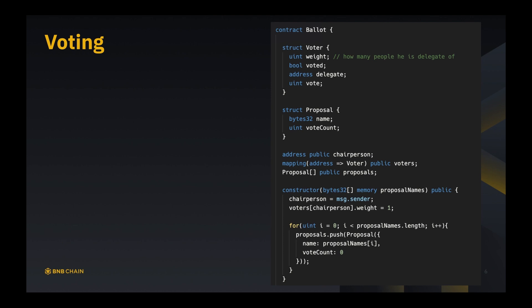The first structure is called Voter. We have unsigned int weight, boolean voted, address delegate, and unsigned int vote. Weight means how many people he's delegate of, or alternatively how many votes his vote will be worth. Initially we will initialize all voters' weight to one, meaning that he is only delegated to himself and no one else.